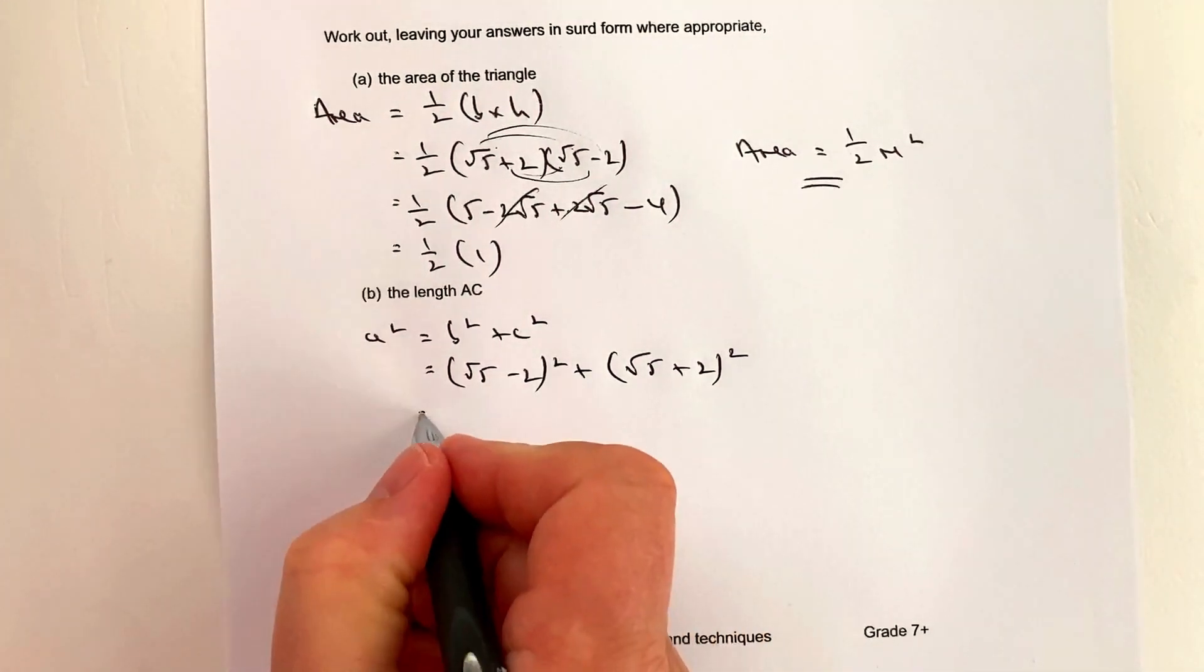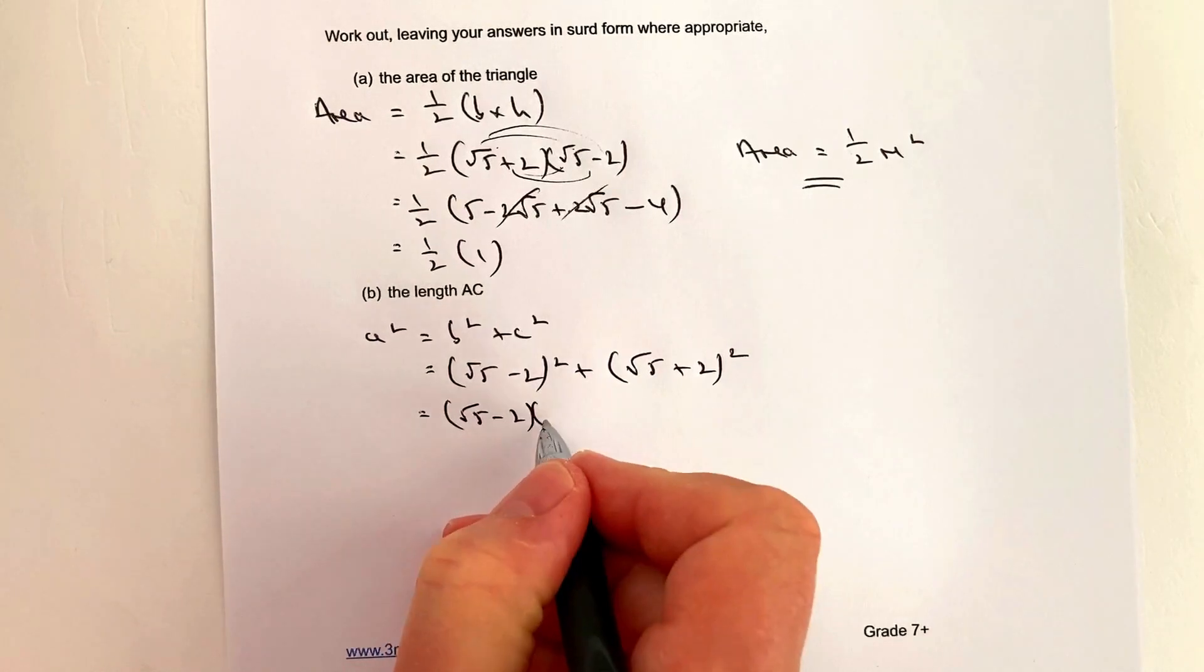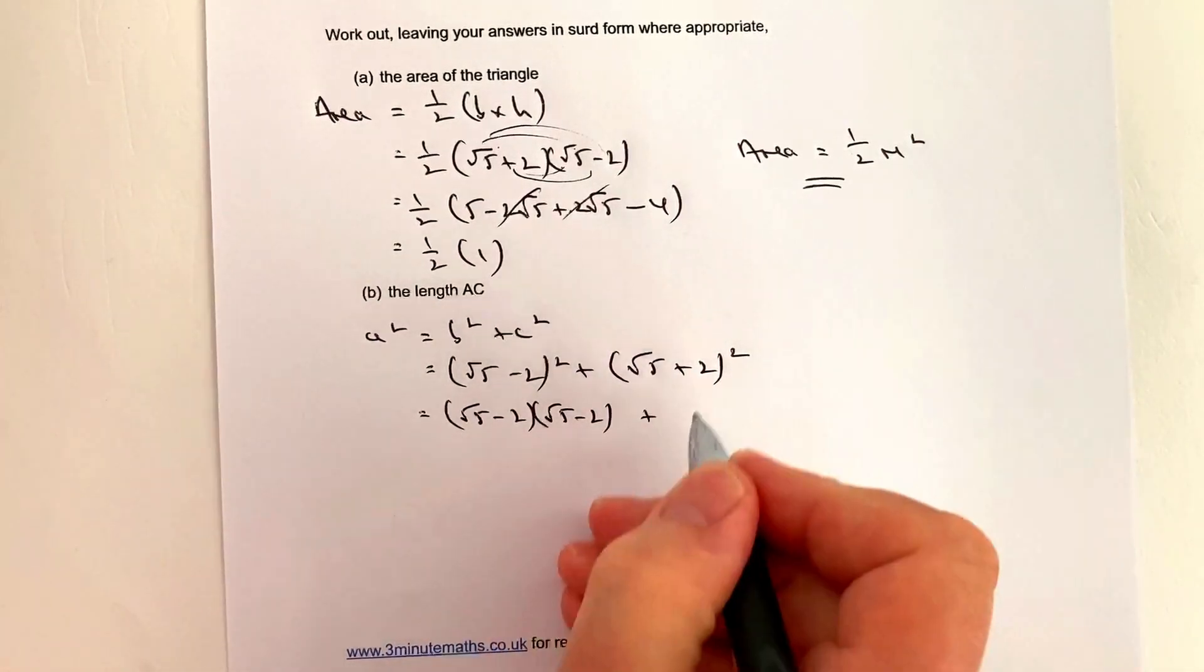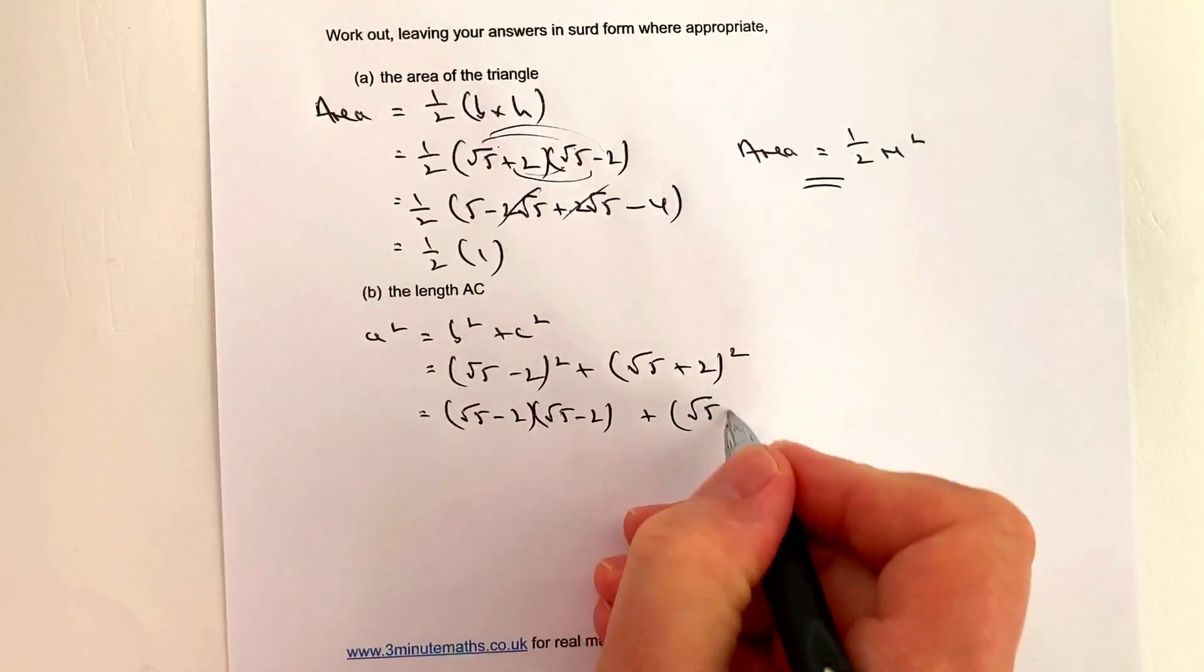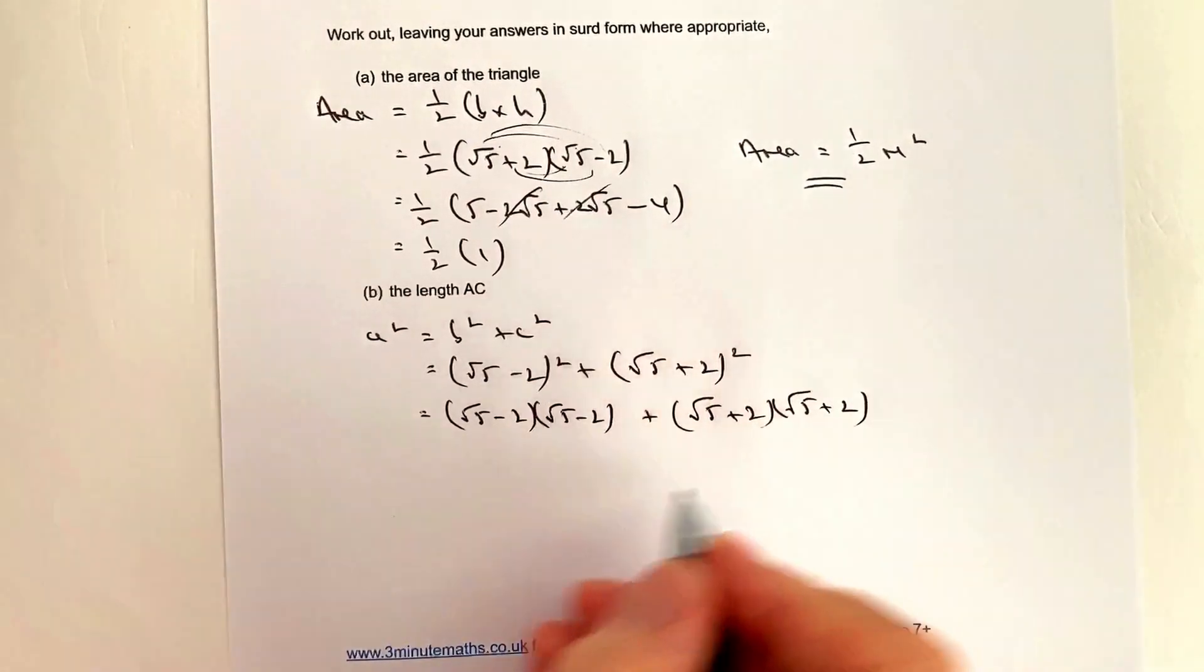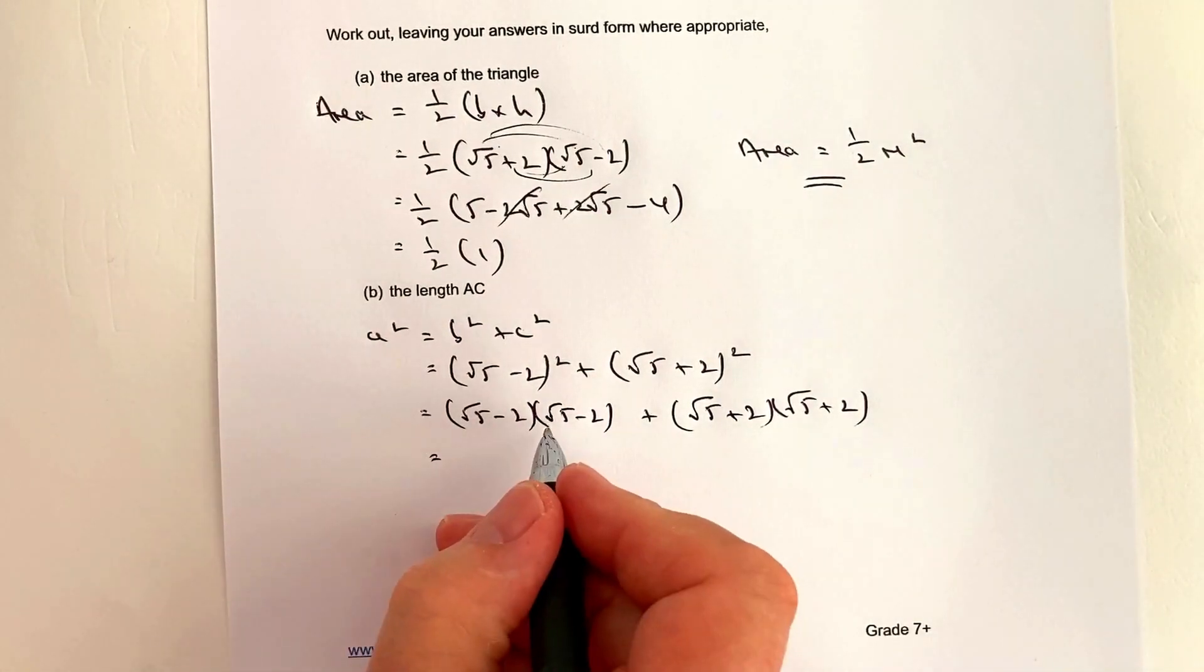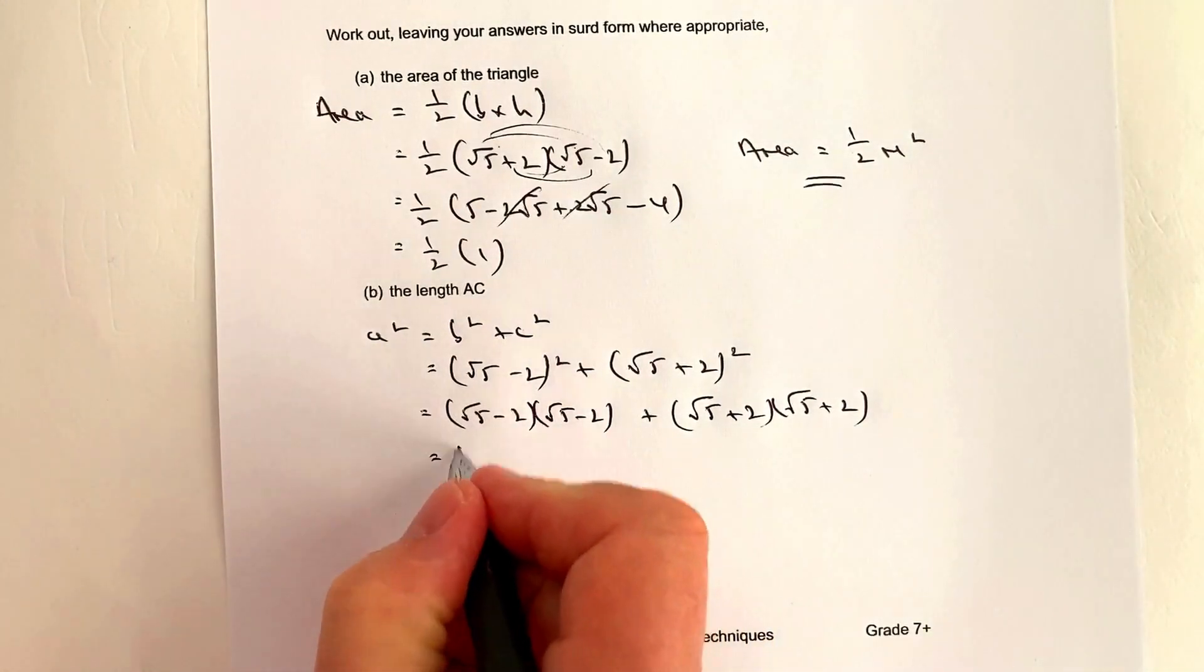I'll expand (√5 - 2) times (√5 - 2), and (√5 + 2) times (√5 + 2). Expanding the first one: √5 times √5 equals 5, then -4√5 + 4.